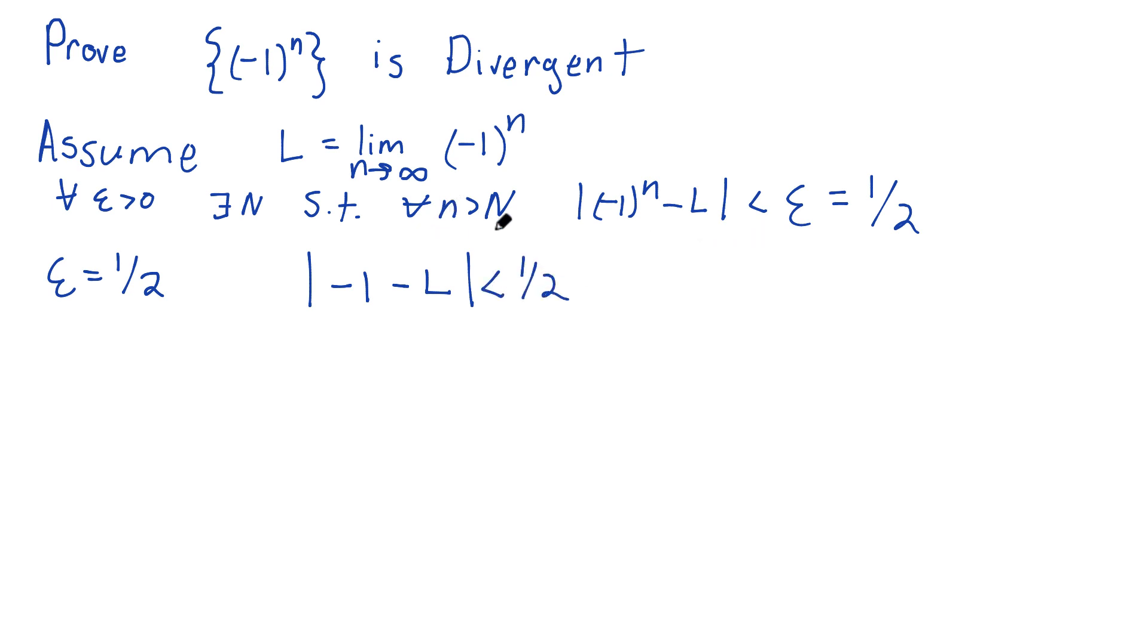And since it's true for every single one after capital N, one of those is going to be even. Well, negative 1 to an even power is positive 1. So we have 1 minus L in absolute value is also less than a half.